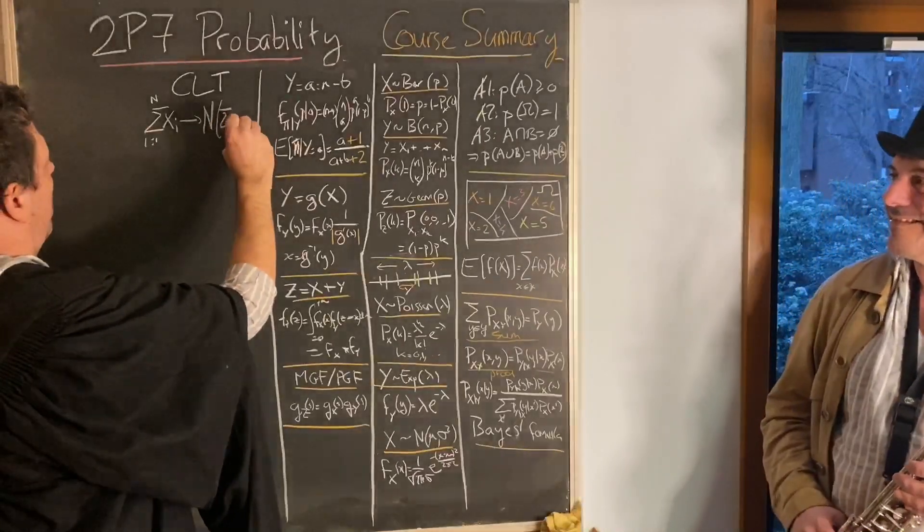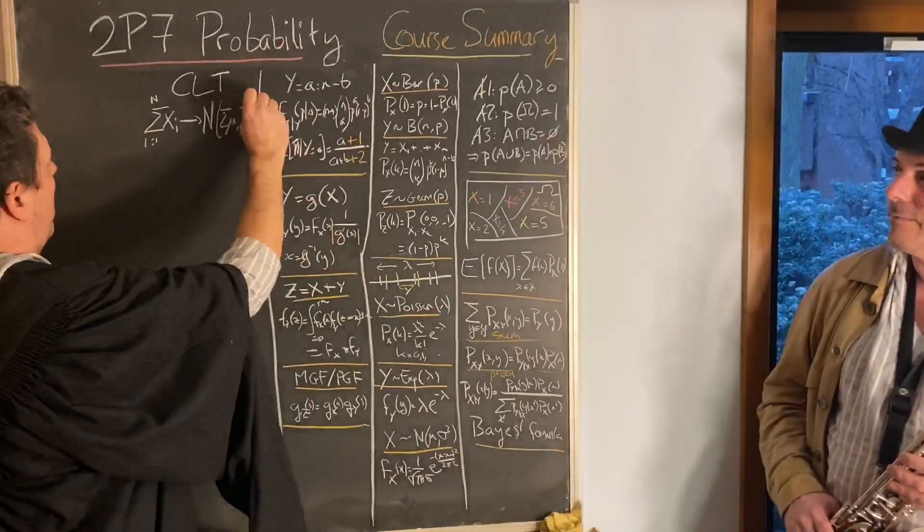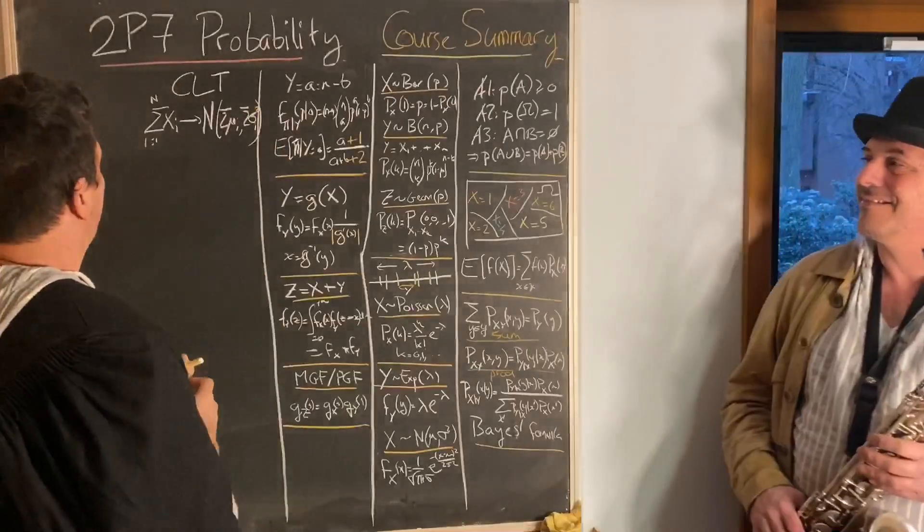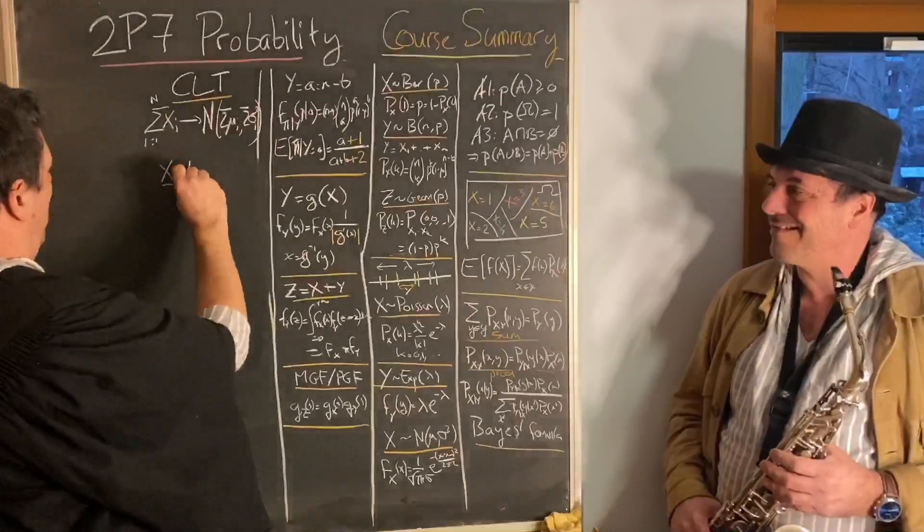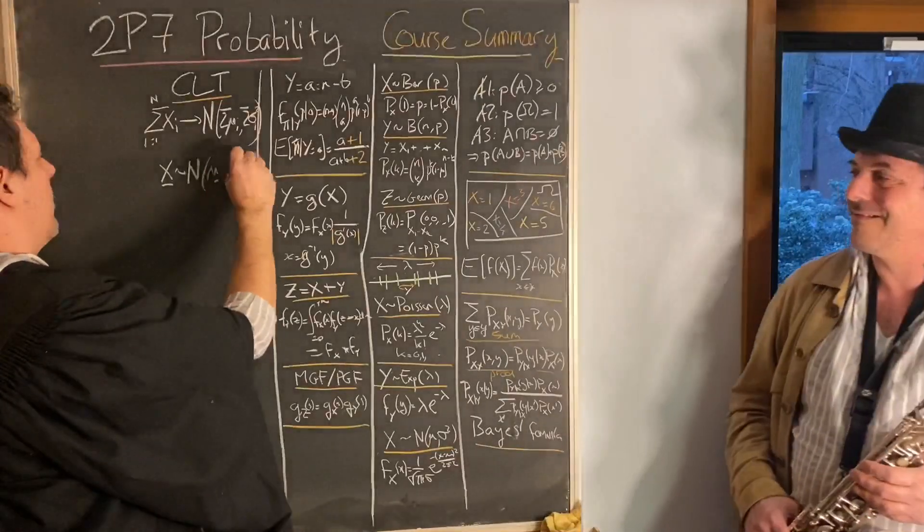The Gaussian makes a big comeback, it's the limit of all the sums, and can be multivariate too.